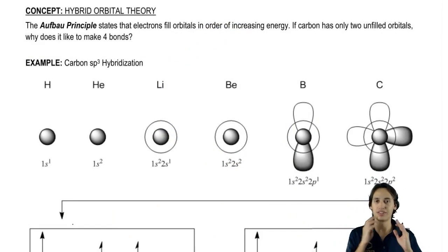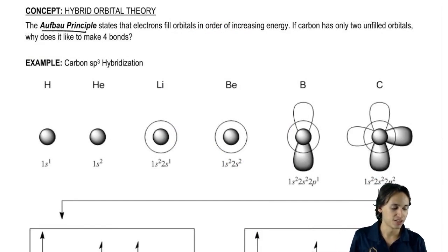So the first thing I want to talk about is just the theory of why this even is possible, why this is a big deal. The Aufbau principle states that electrons can fill orbitals in order of increasing energy.